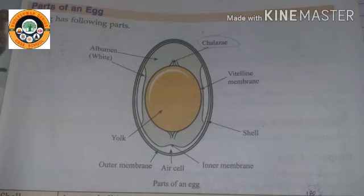Next we see the air cell. The air cell is found between the inner and outer membranes and is located at the larger end of the egg. The air cell forms when the contents of the egg cool and contract after the egg is laid. The air cell rests at the egg's larger end, and we can also call it an air pocket.